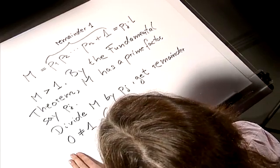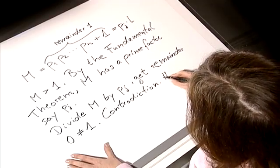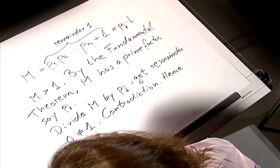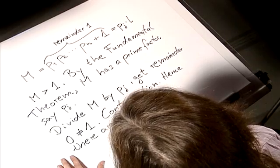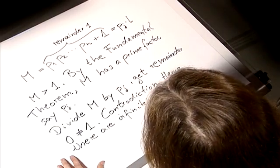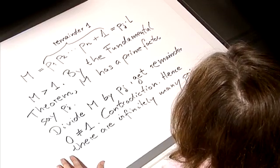We have used proof by contradiction. Our initial assumption that there are finitely many primes must be wrong. Hence, there must be infinitely many of them, and we are done with the proof. We have shown that there are infinitely many prime numbers using proof by contradiction.